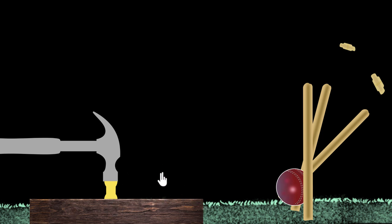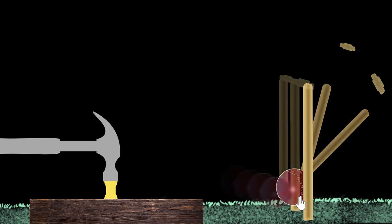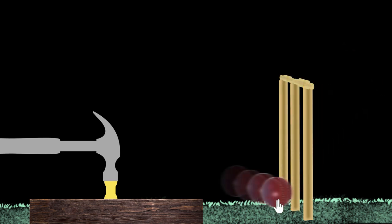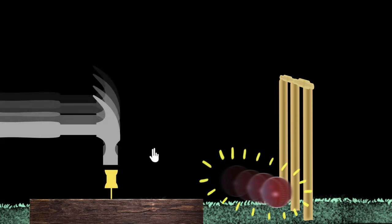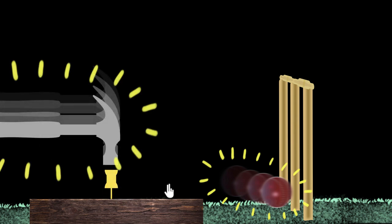What's common in both of these? Before the ball hit the stumps, it was moving. So a moving ball has the capacity to do work, and therefore it has energy. Similarly, before hitting the nail, the hammer was moving. So a moving hammer has the capacity to do work and must have energy as well. Any moving object must have energy — and the faster it moves, the more energy it should have, because it can do more work.